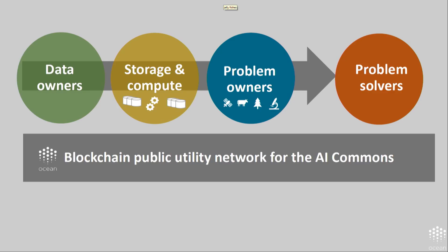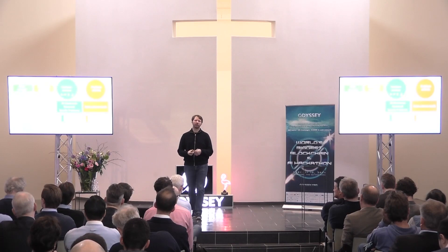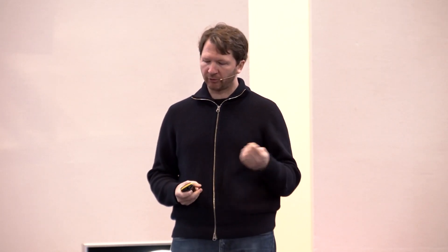For the substrate to connect these, let's have a blockchain-based public utility network for the AI Commons. The data owners on the far left are interacting with different service provider front ends — basically supplying data. There are also people supplying markets for storage and for compute. What are they getting in return? For the priced stuff, they can be getting paid. But also imagine block rewards for people supplying data to the commons. Overall, what we're really trying to do is spread the benefits of AI to the world, and to equalize the opportunity to access AI — it's really about spreading data and making data accessible to a much broader set of people.